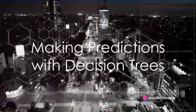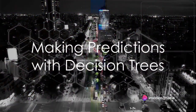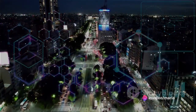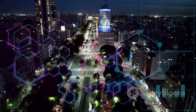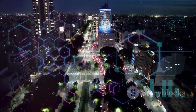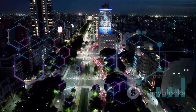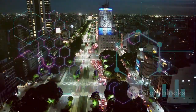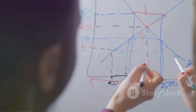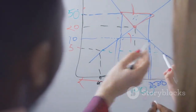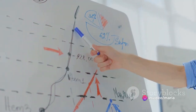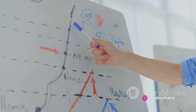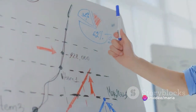Once the decision tree is built, making a prediction is simple. Start from the root node, follow the path based on conditions, and finally reach a leaf node. The class or value at this leaf node is the prediction given by the decision tree.